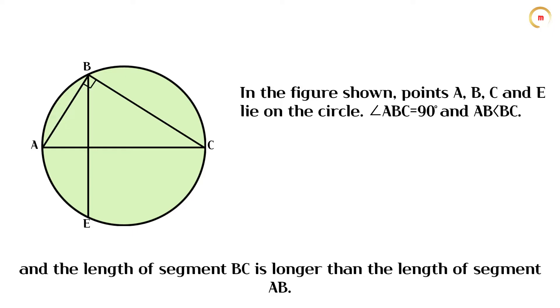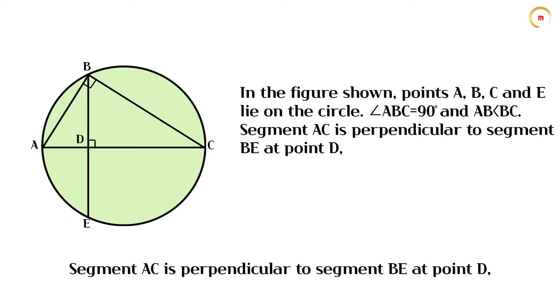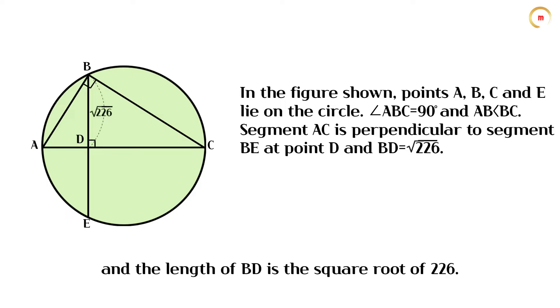The length of segment BC is longer than the length of segment AB. Segment AC is perpendicular to segment BE at point D, and the length of BD is the square root of 226.